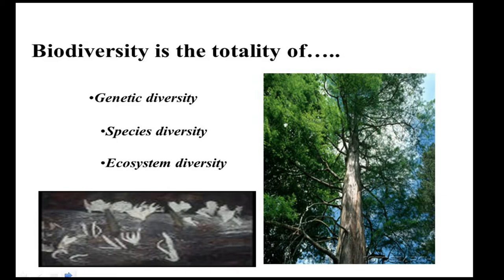Biodiversity is therefore the totality of genetic diversity, species diversity and ecosystem diversity. Genetic diversity refers to diversity within species, that is intra-species. Species diversity refers to diversity between species, that is inter-species, also known as organismic or taxonomic diversity. Ecosystem or ecological diversity refers to diversity at the habitat or ecological level.